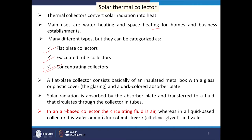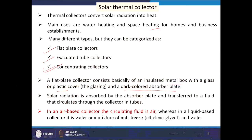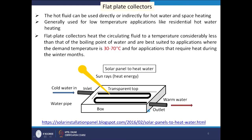When we use concentrating collectors, we can get very high temperature water or even produce high temperature steam, which can be used for electricity production in a steam turbine. A flat plate collector consists of an insulated metal box with a glass or plastic cover and a dark-colored absorber plate. Solar radiation is absorbed by the absorber plate and transferred to the fluid circulating through tubes in the collector.